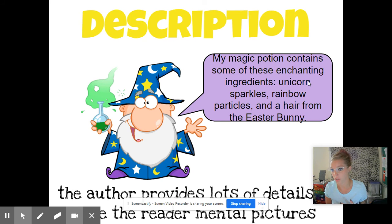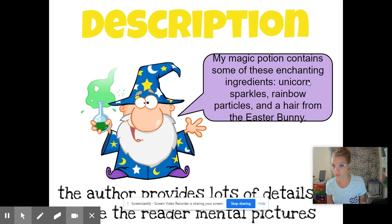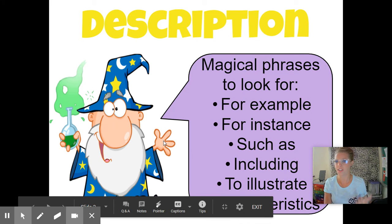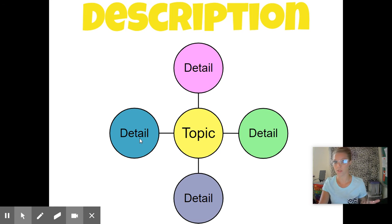The first one is description. Description is when your author wants to tell you specific details about something. So if you look at the example, it says 'my magic potion contains some of these enchanting ingredients: unicorn sparkles, rainbow particles, and a hair from the Easter Bunny.' The author is talking about what the ingredients are in the potion — just to give you a lot of detail, maybe to help you get a mental picture of the topic. You want to look for words like 'for example,' 'for instance,' 'such as,' 'including,' 'to illustrate,' and 'characteristics.' You may see one topic and then all these details — like if my topic is sports, I may talk about practicing, the game itself, umpires, and if it's professional sports, what you would get paid.